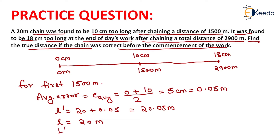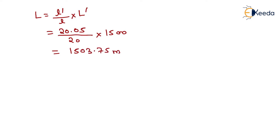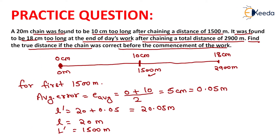Capital L' equals 1500 meters, because we measured this distance with the faulty chain. Now we compute the actual distance using the formula: capital L equals (l' divided by l) multiplied by capital L'. Substituting: l' equals 20.05, l equals 20, and capital L' equals 1500. Solving this, we get 1503.75 meters — that is the correct distance from the starting point to the midpoint.